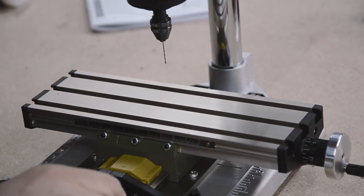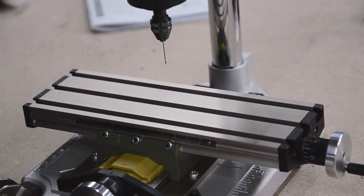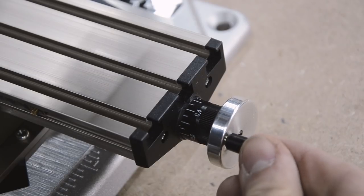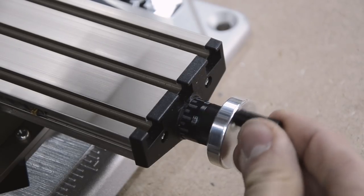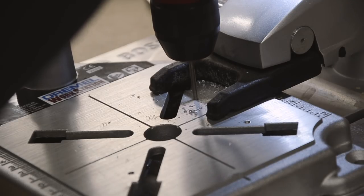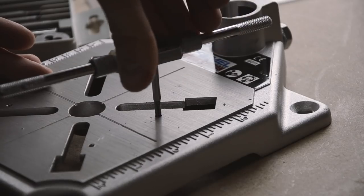And this is an XY table, or a coordinate table. It has T-slots which can be used to clamp work pieces on it. The table can then be moved with two cranks in the X and Y axis. This is accurate to the twentieth of a millimeter. One full revolution corresponds to one millimeter. To fix the cross table to the Dremel holder, I drilled a few threads in it and then screwed it on.